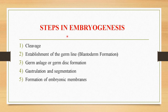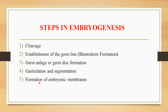The steps in embryogenesis are: first, cleavage; second, establishment of germline or blastoderm formation; third, germ analogue or germ disc formation; fourth, gastrulation and segmentation; and fifth, formation of embryonic membranes.